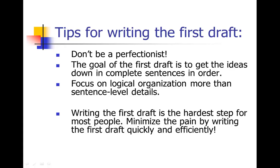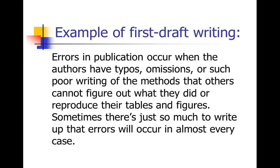I thought it'd be fun to share some examples of first-draft writing that I pulled out of my own work. I went through my files and found some first drafts and picked out some paragraphs just to show you what comes out on a first draft. Here's a short paragraph that I'd written on a first draft. It said: 'Errors in publication occur when the authors have typos, omissions, or such poor writing in the methods that others cannot figure out what they did or reproduce their tables and figures.'